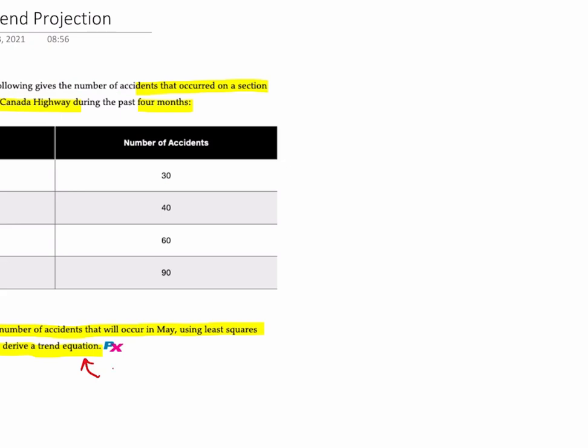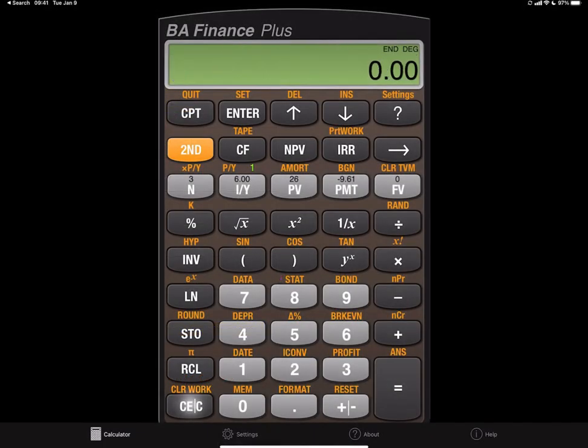Well, this is basically asking us to do a trend projection. And the way we're going to do that is we're going to treat our months as the x variable and the number of accidents as the y variable. So let's hop over to our BA2 Plus calculator and let's give this a go.